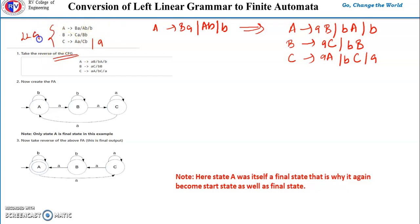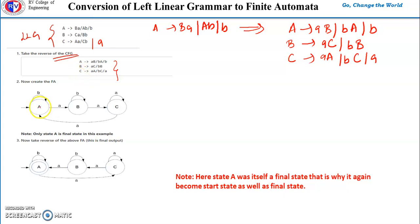So this is step one — we have reversed the given left linear grammar and obtained a right linear grammar. Now for step two, we have to create the finite automata from this right linear grammar, applying the same procedure we use to convert right linear grammar to finite automata.